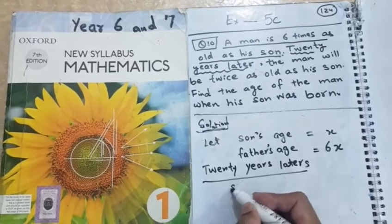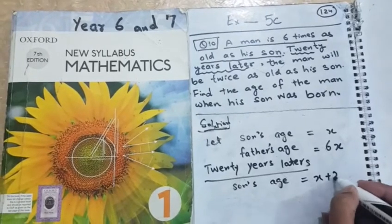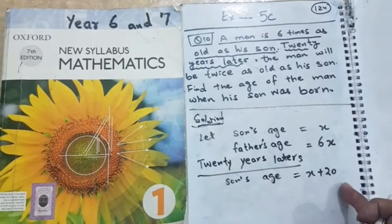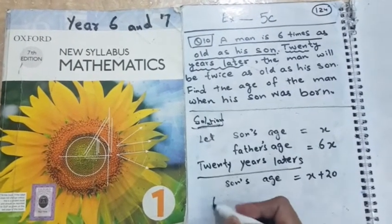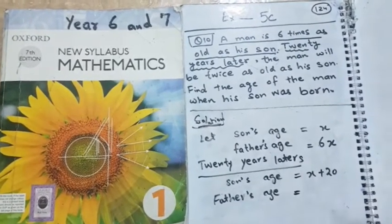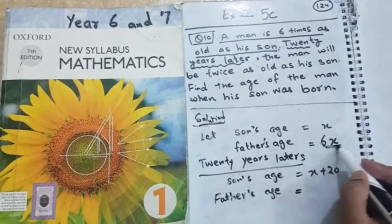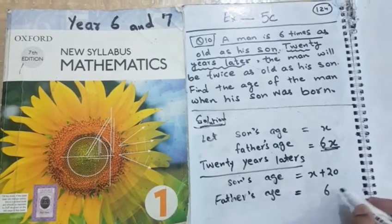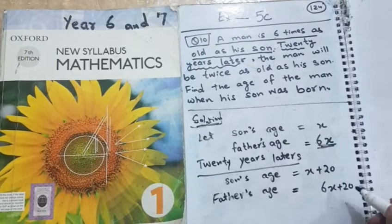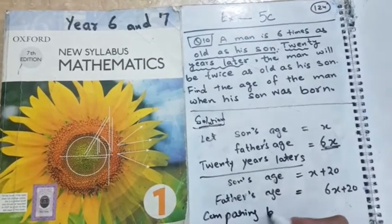After 20 years, son's age will be x plus 20. Of course, if the son is x years now, after 20 years, he will be x plus 20. Then father's age will be. Of course, there is the addition of 20 in father's current year was 6x. And after 20 years, father's age becomes 6x plus 20. But if we compare it with the son's age, comparing both ages.